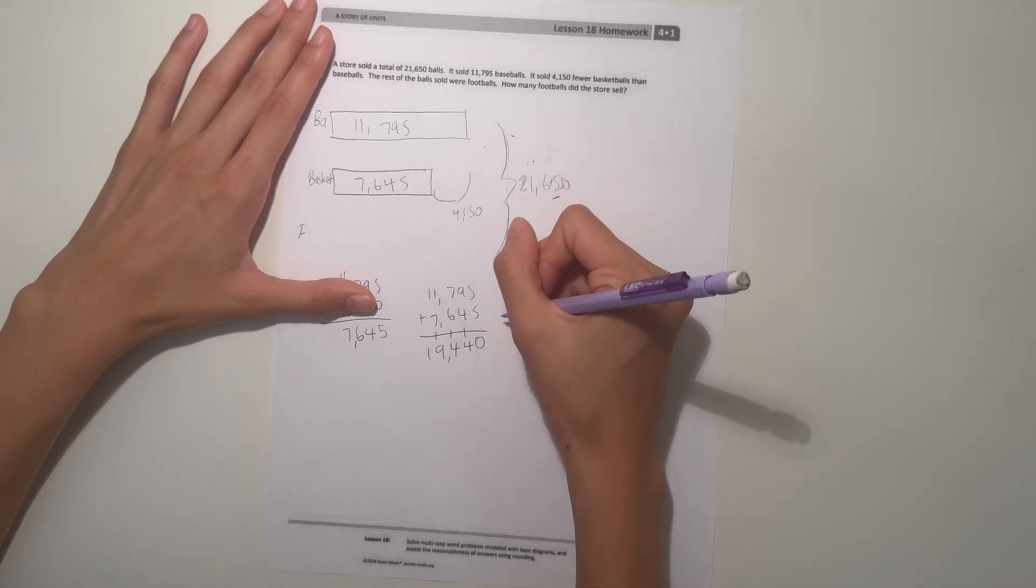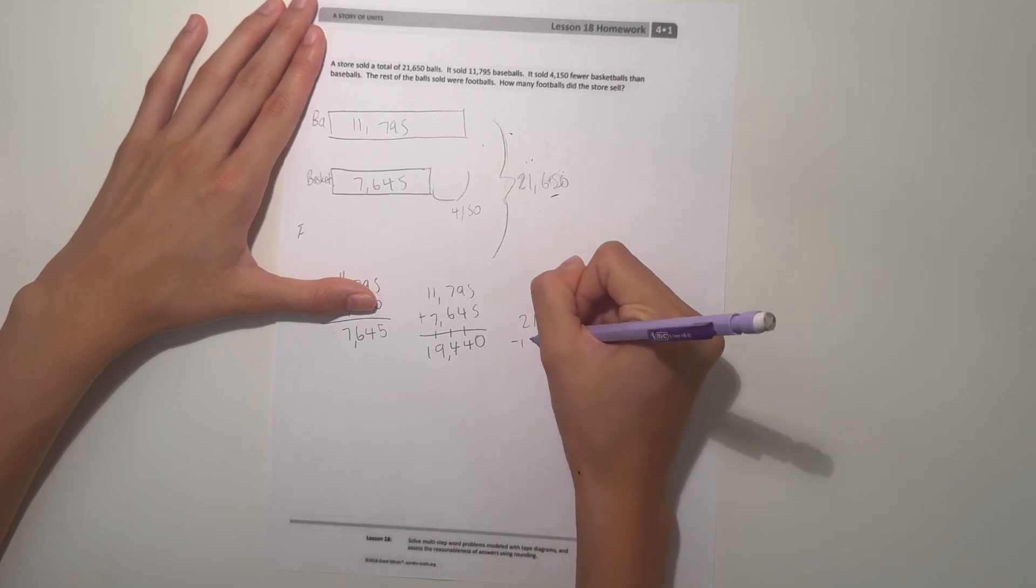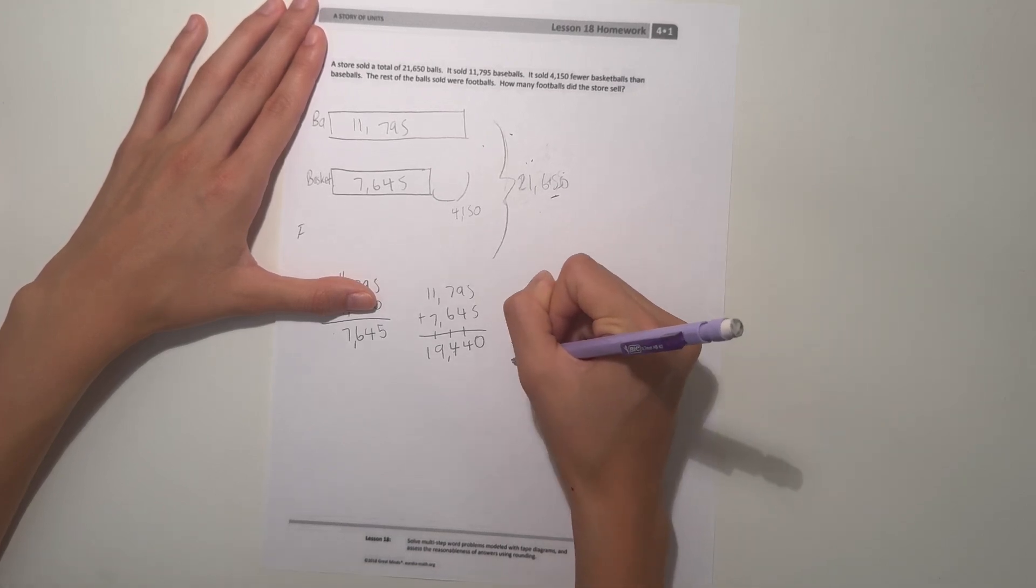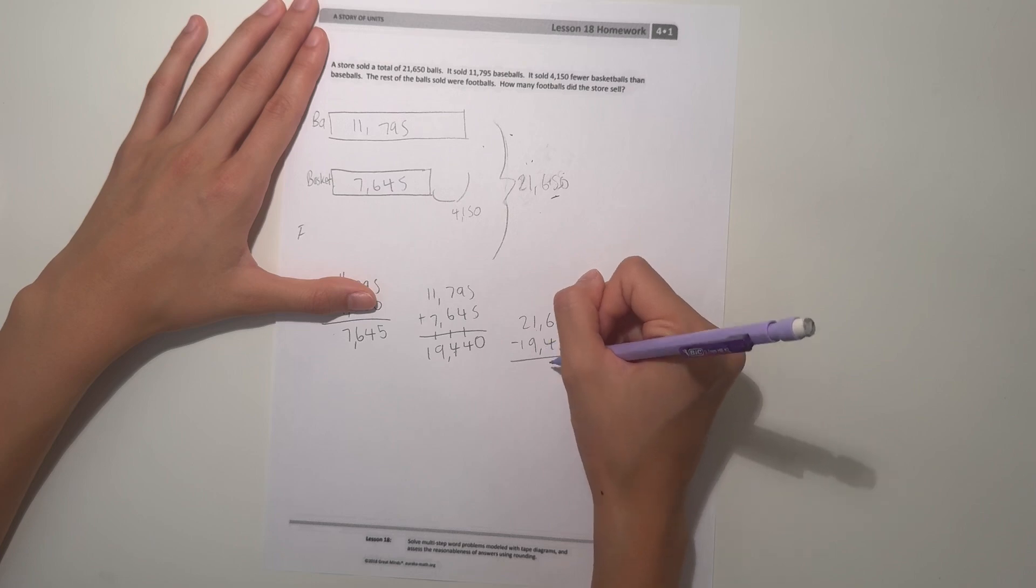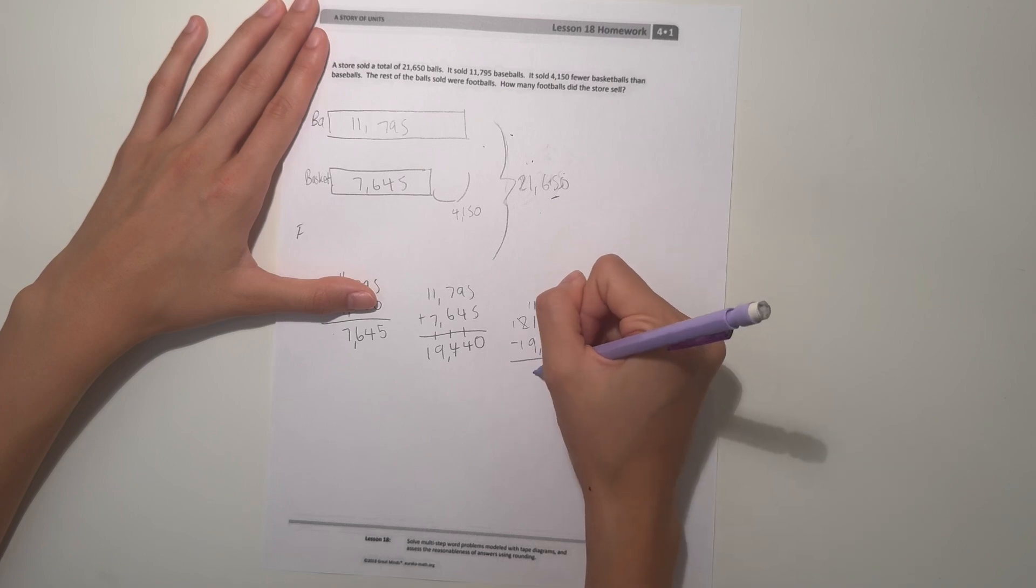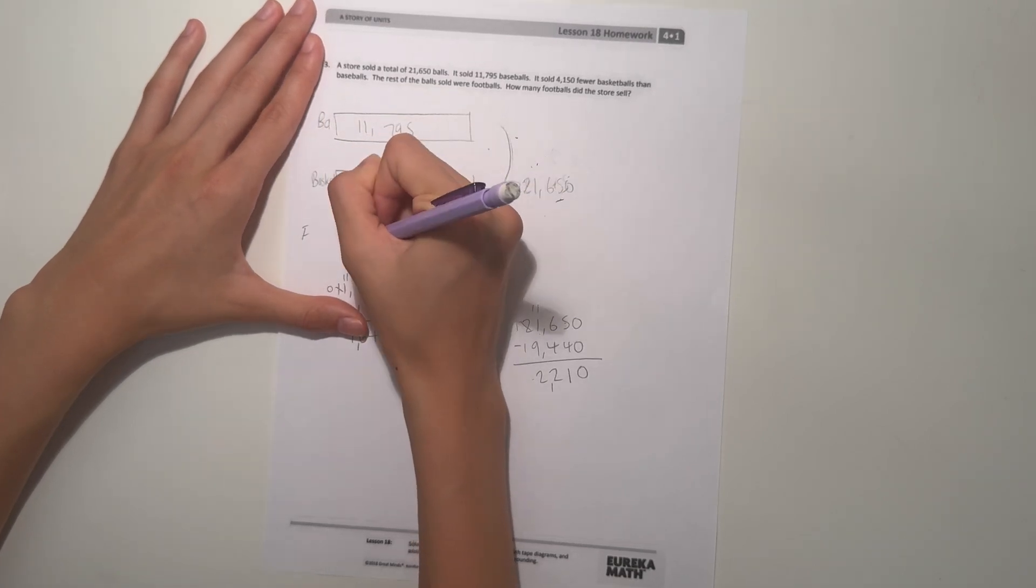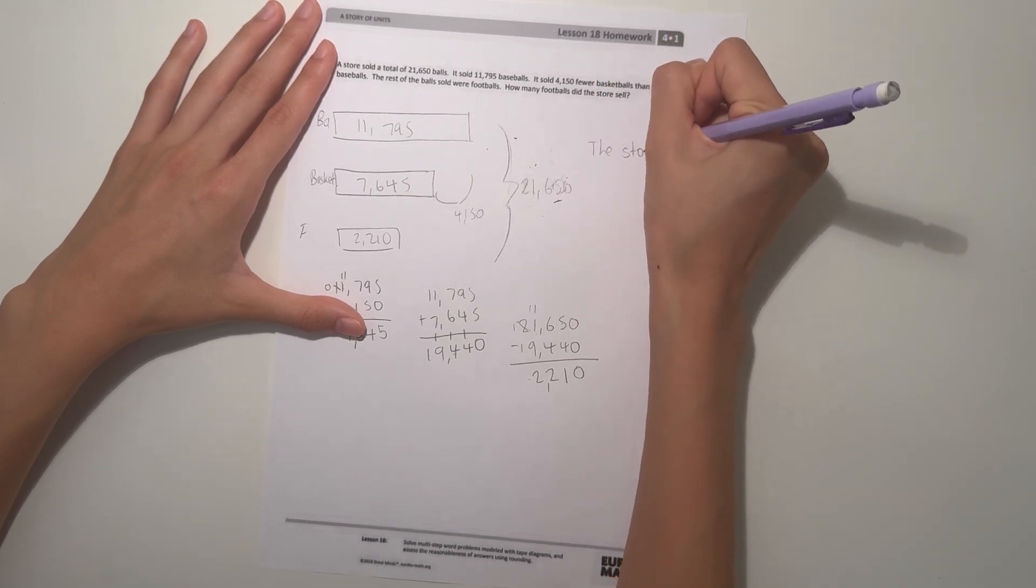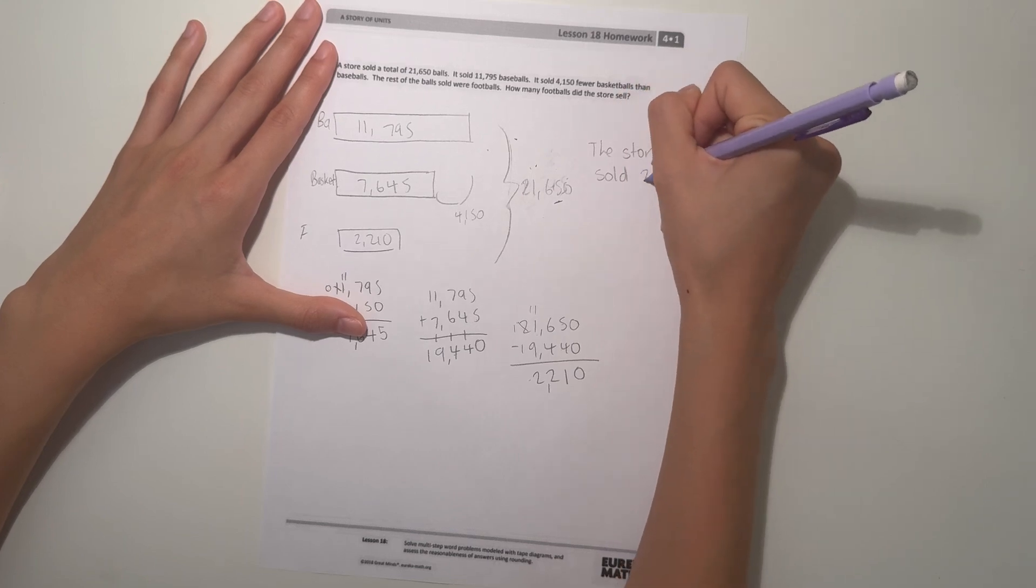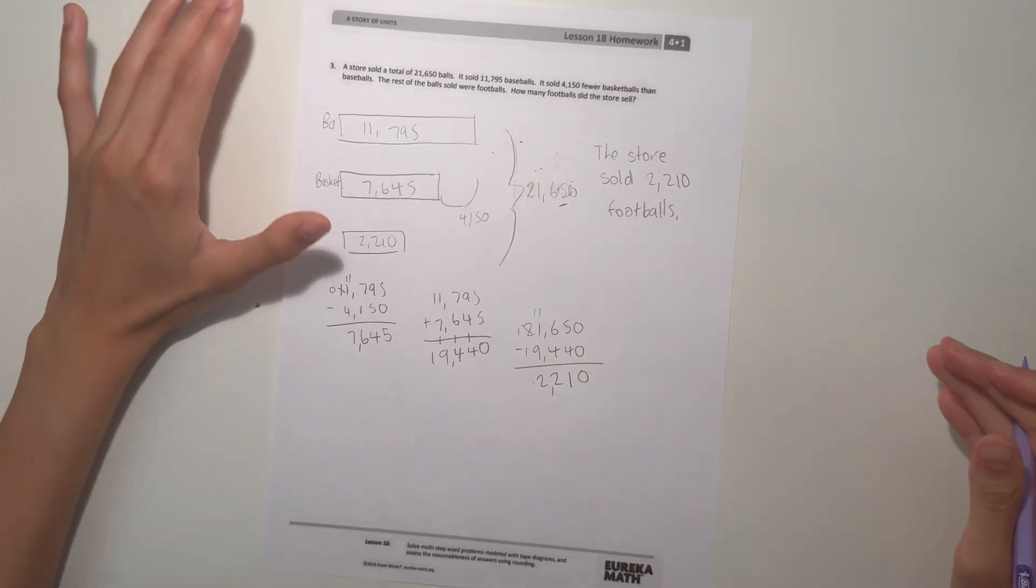To find the amount of footballs, we just subtract this from the total. So 21,650 minus 19,440: 0 minus 0 is 0, 5 minus 4 is 1, 6 minus 4 is 2, borrow 10, 11 minus 9 is 2, and 1 minus 1 is 0. So 2,210, which means they sold 2,210 footballs. The store sold 2,210 footballs.